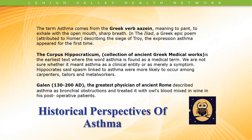In the Corpus Hippocrinicum, a collection of ancient Greek medical works, it's the earliest text where the actual word asthma is found as a true medical term. We are not sure if it meant asthma as a clinical entity or more as a symptom of a bigger disease. Hippocrates said that a spasm linked to asthma was more likely to occur among carpenters, tailors, and metal workers — so even early on, there was a propensity toward occupational asthma.